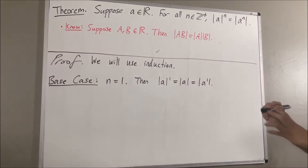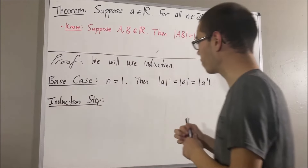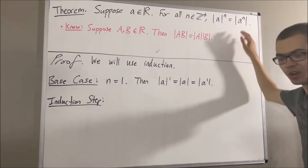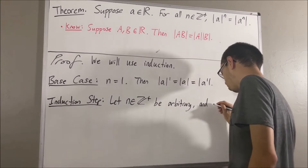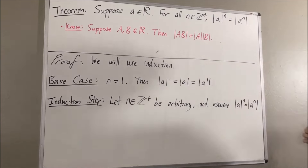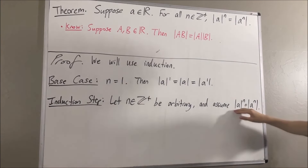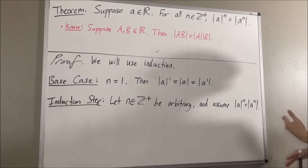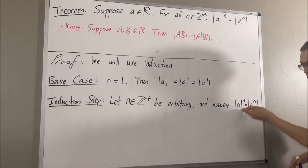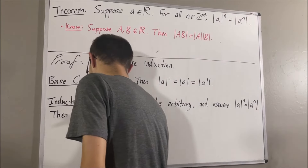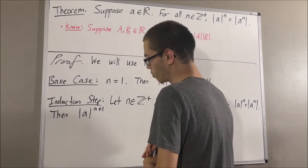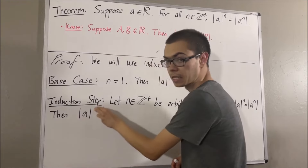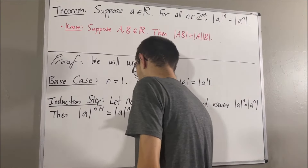Now let's move on to the induction step. In the induction step, we give ourselves an arbitrary positive integer n where this is true. The whole goal of the induction step is to show that this is also true where instead of n we have n plus 1. So let me start by writing the left hand side where we have n plus 1. One of our rules for exponents tells us that this is equal to the absolute value of a to the power of n, times the absolute value of a.